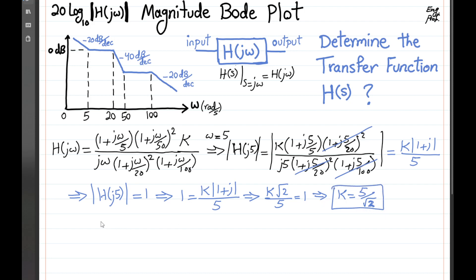Therefore, the overall transfer function, substituting s with j omega, becomes k is 5 over square root of 2, and then the rest of it is 1 plus s over 5, and 1 plus s over 50 squared, and divide by s, 1 plus s over 20 squared,